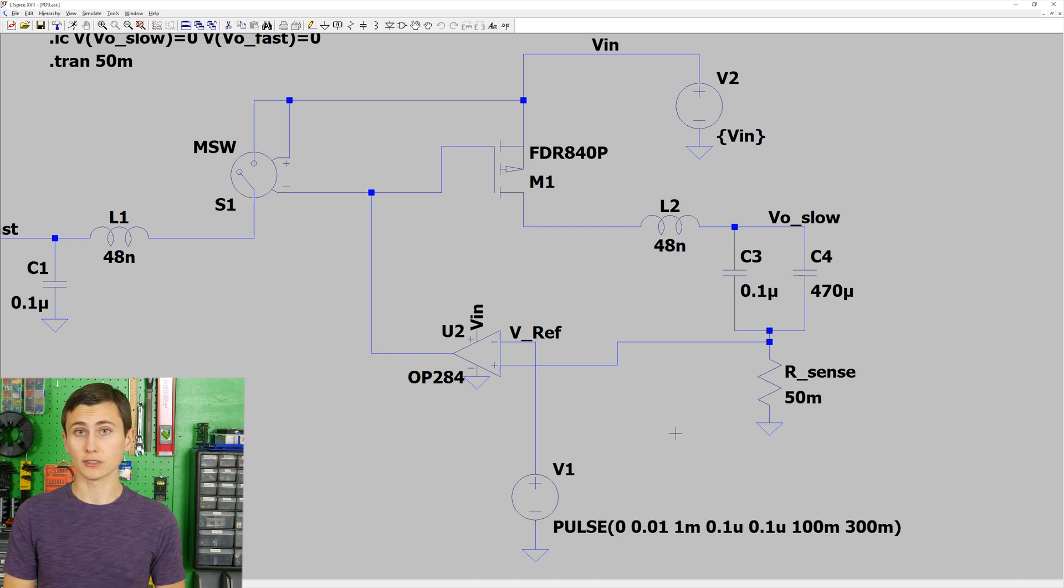It's important that the current setpoint is adjusted such that it's higher than the maximum operating current of the load being powered. If too much current is drawn from this circuit, it'll start to fold back the output voltage and go into a current regulating mode.